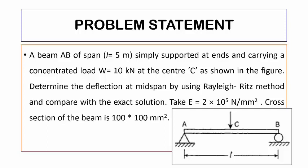Determine the deflection at midspan by using Rayleigh-Ritz method and compare with the exact solution. Take Young's modulus E as 2 times 10^5 N per mm² and cross section of the beam is 100 by 100 mm².